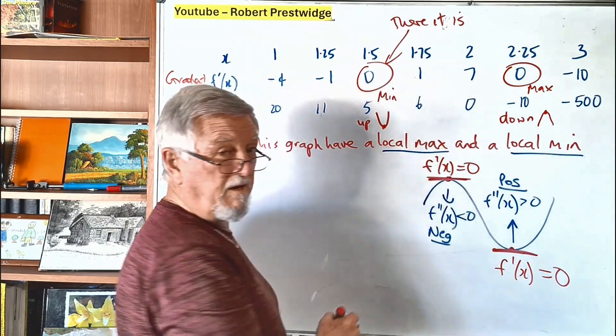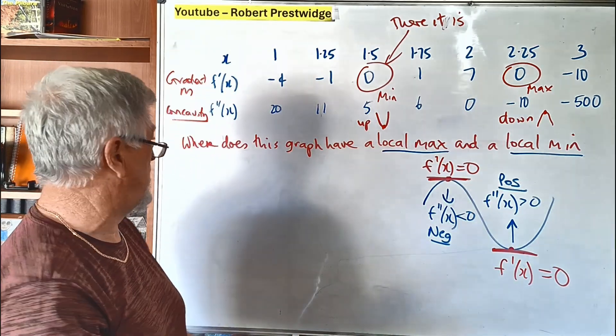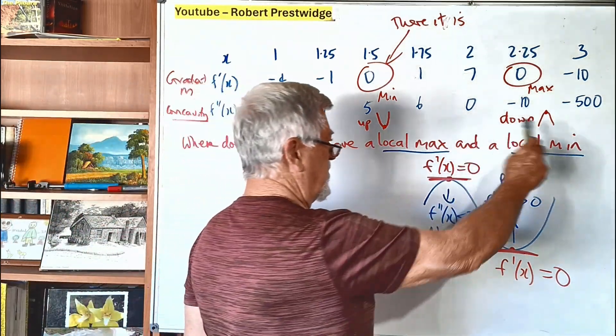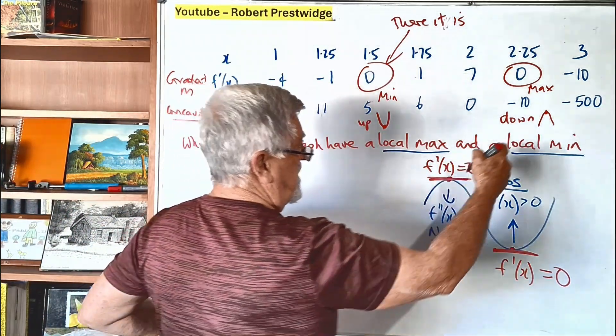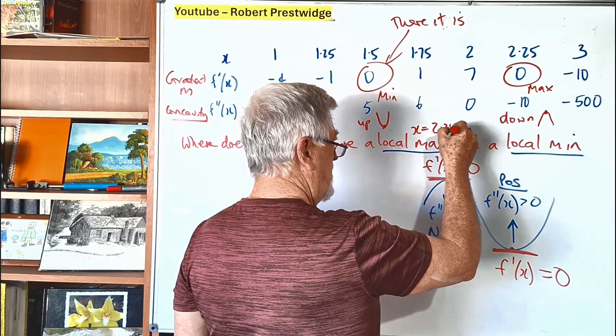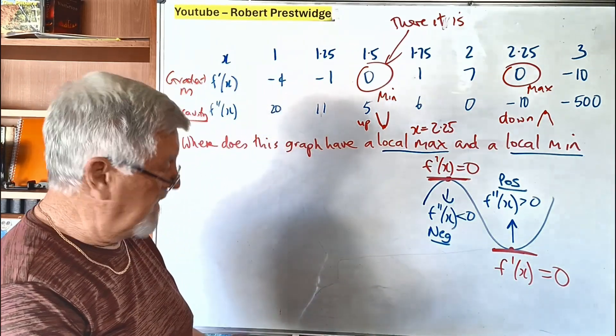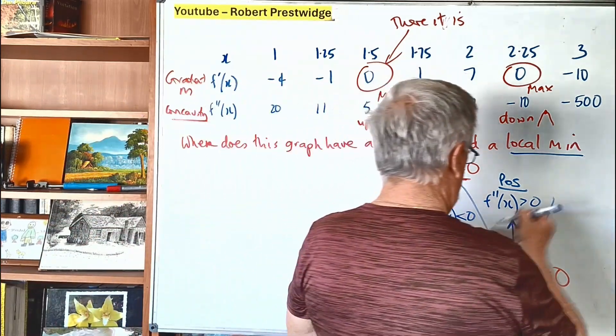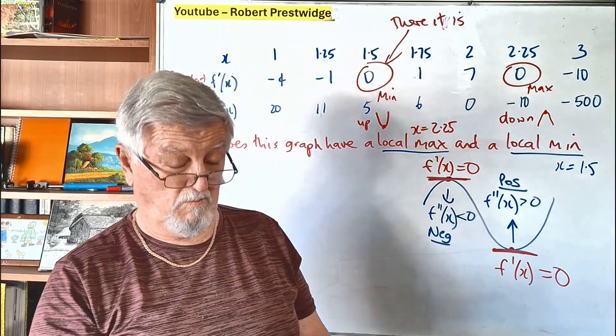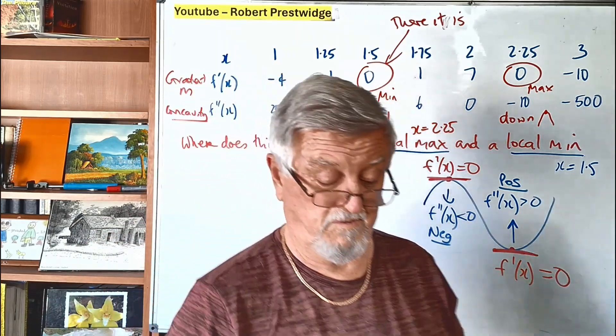You need to make it really clear which one's which but they're not asking for the y value. Where does this graph have a local max and a local min? The local max is when x was 2.25 and where does it have a local min? The local min was when x is 1.5. I hope that helps. I don't know if I do any more. There might be another one. I'll see what I can do.